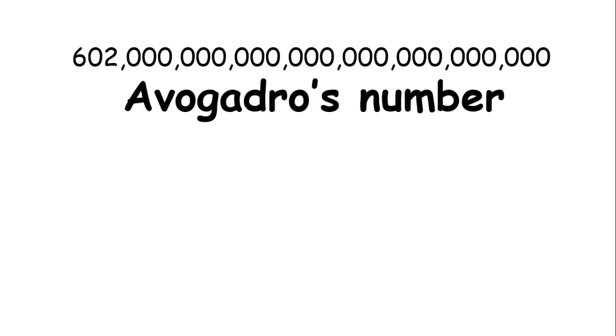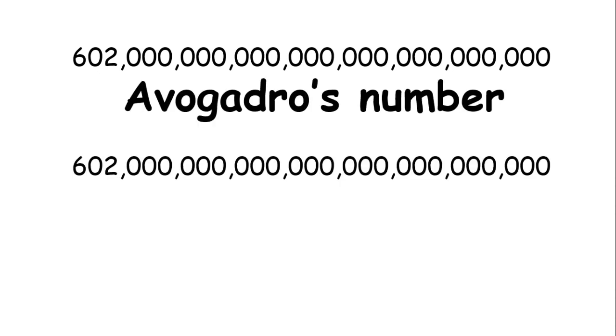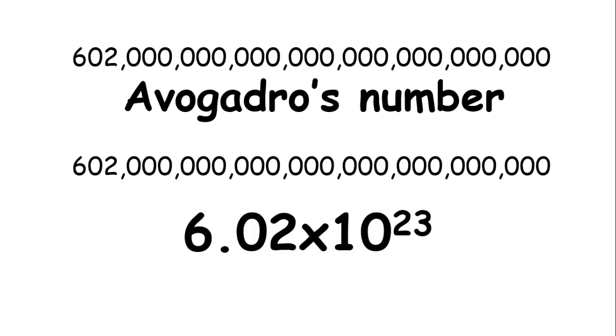So this 602 hexillion is what we call Avogadro's number. You can't really write this long when solving, right? It would be tedious and time consuming. So what we do is we write it in scientific notation. If we use scientific notation, we will have 6.02 times 10 to the 23rd power. Why 23? Because if you count the digits from the last zero until the number before 6, you will have 23.